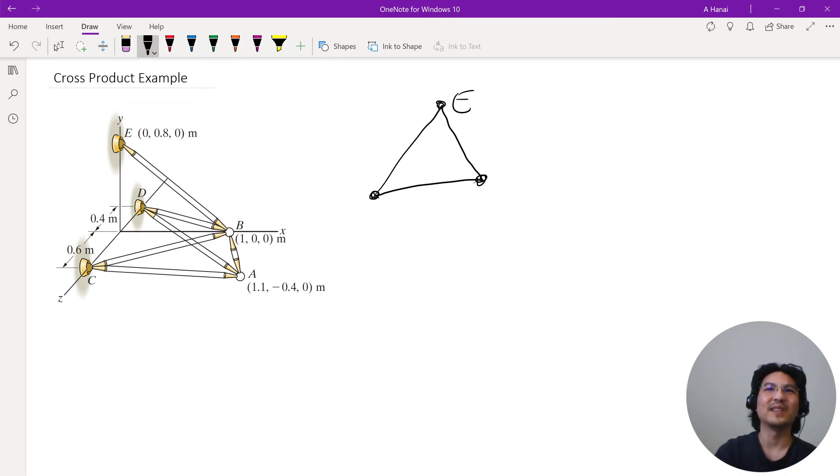So one way to do that is you define a unit vector normal to the plane. So let's say you have these three points and we know the coordinates of all three. This is 0.8, 0, this is 1, 0, 0, and then C is 0, 0, 0.6. So you know the coordinates of all three.